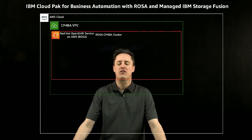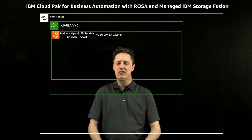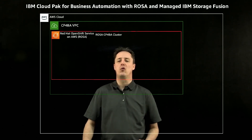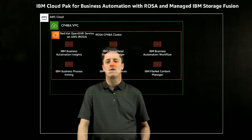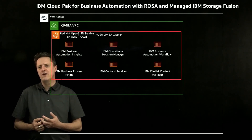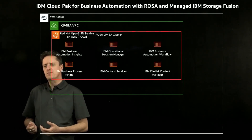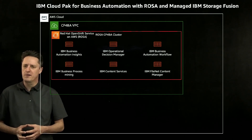Cloud Paks are a construct that IBM uses for their software, where they take multiple IBM products that complement each other and bundle them together into a single product offering that can be purchased and deployed. So instead of deploying all of these components individually, you have a deployment mechanism for the Cloud Pak and it installs all of those components as containerized workloads on top of OpenShift. What Cloud Pak for Business Automation essentially is, is all of the components needed for a comprehensive file management system — including a content management component provided by FileNet.